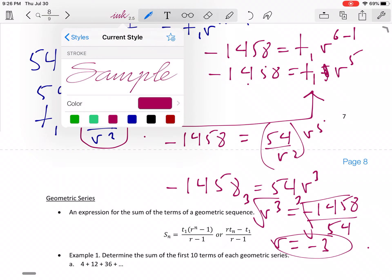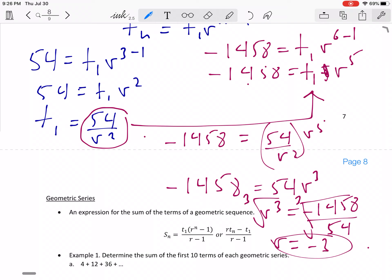So now we have R and so because we have R, now we can find out what T1 is. So like we can just use this equation over here, T1 equals 54 over R squared. It doesn't have to be this one, it could be the other equation as well. So T1 is going to equal 54 divided by negative 3 squared and that's going to give you 6.